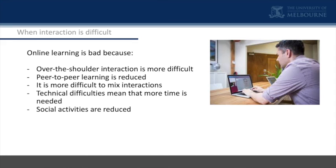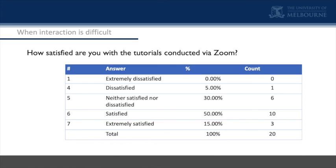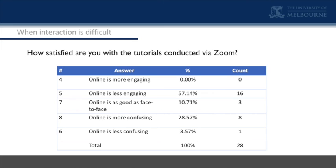Because of technical difficulties, everything takes longer online. Lesson plans drawn up for a two-hour face-to-face class — we don't get to the end; we need another half hour. And obviously we can't go have the barbecue and football match online. In our recent survey: tutorials via Zoom were generally satisfying — only one person was dissatisfied. However, online is definitely less engaging, meaning less interaction and involvement in the learning, and it is more confusing. Three people said online is as good as face to face, but generally students say it's less engaging while also being generally satisfied.